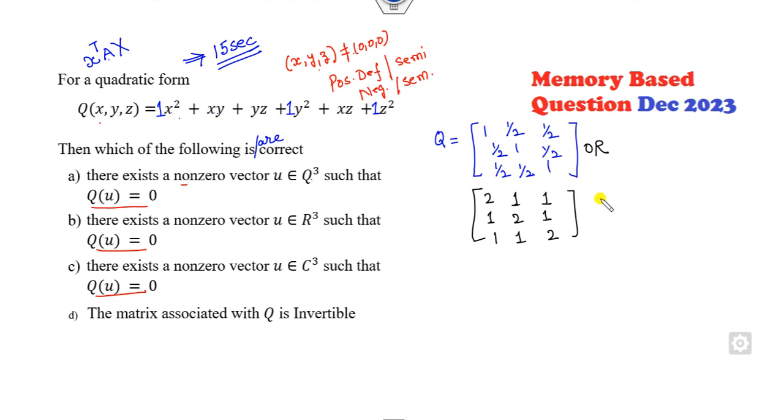Now your target is to check whether this is positive definite or positive semi-definite. If you prove that it is positive semi-definite, then this option is correct. So how can you check that? The first minor is 2, which is greater than 0. Second minor is 2 by 2, that's 4 minus 1, which is again greater than 0.